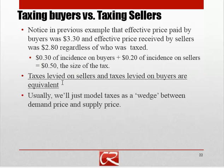One thing to notice is that the tax levied on the buyers and the tax levied on the sellers were totally equivalent. There might be some small issues of administrative convenience — who it would be easier to actually collect the tax from — but aside from that, taxes on buyers and taxes on sellers are pretty much the same. Because of that, from now on we're usually going to model taxes as just driving a wedge between the price that buyers pay and the price that sellers get to keep, and we won't worry about exactly who the tax is imposed upon, because it doesn't really matter.